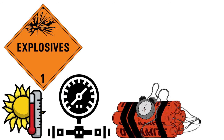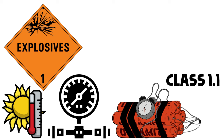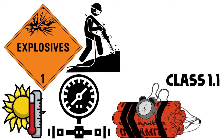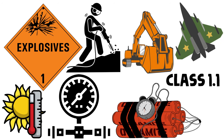Our first class is Class 1: Explosives. These are materials that can explode when subjected to heat, shock, or pressure — think dynamite or fireworks. Items are labeled with specific numbers indicating their level of danger; for example, dynamite is classified as Class 1.1, indicating it's highly explosive. Explosives have the potential to cause immense damage and harm if mishandled.